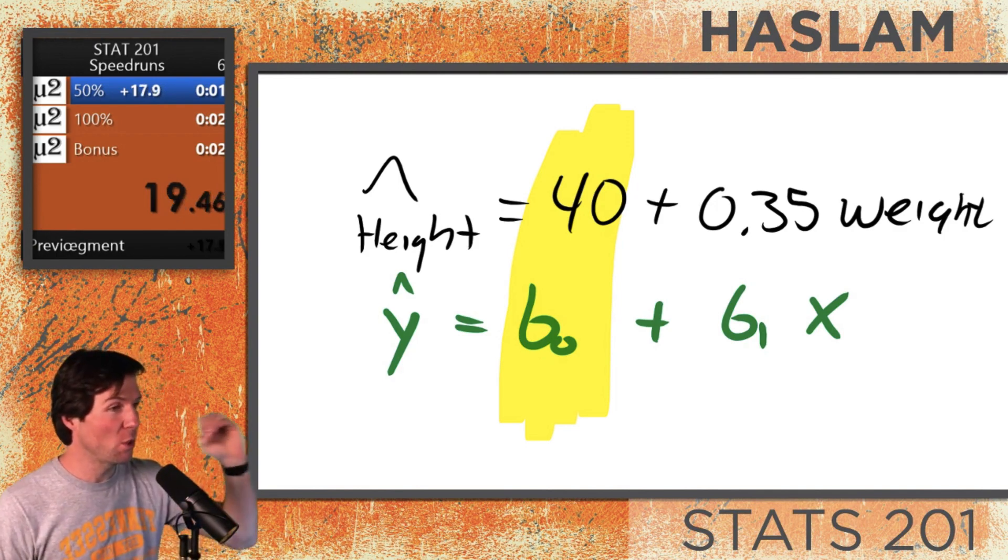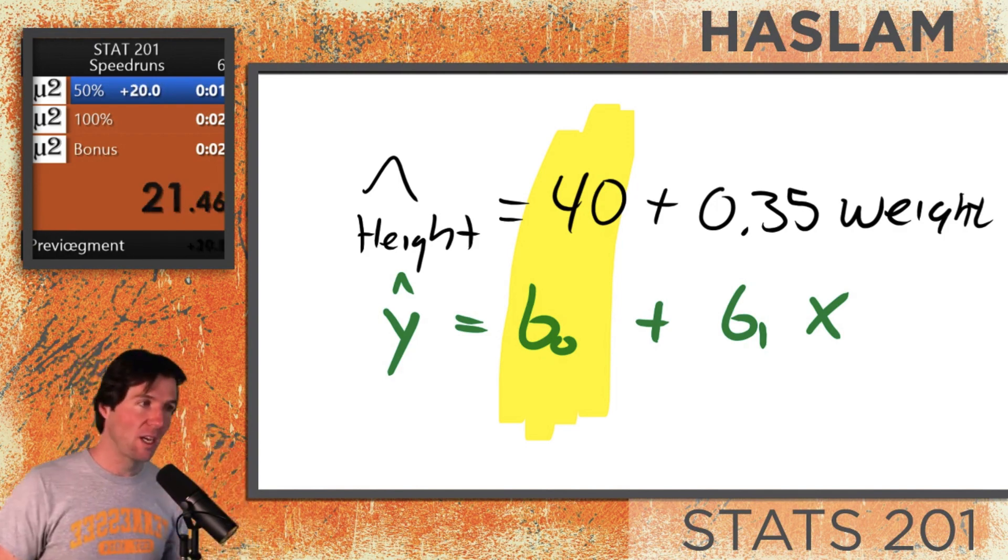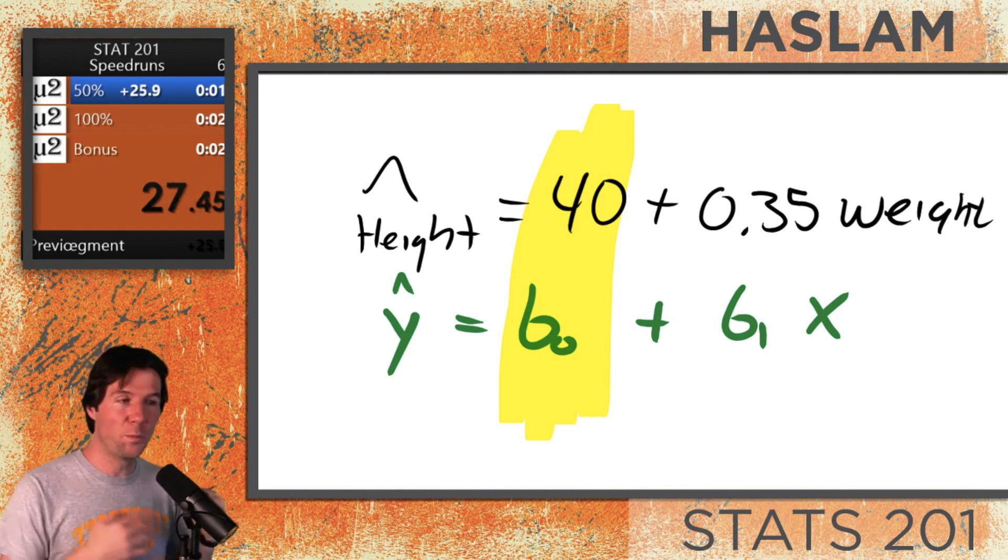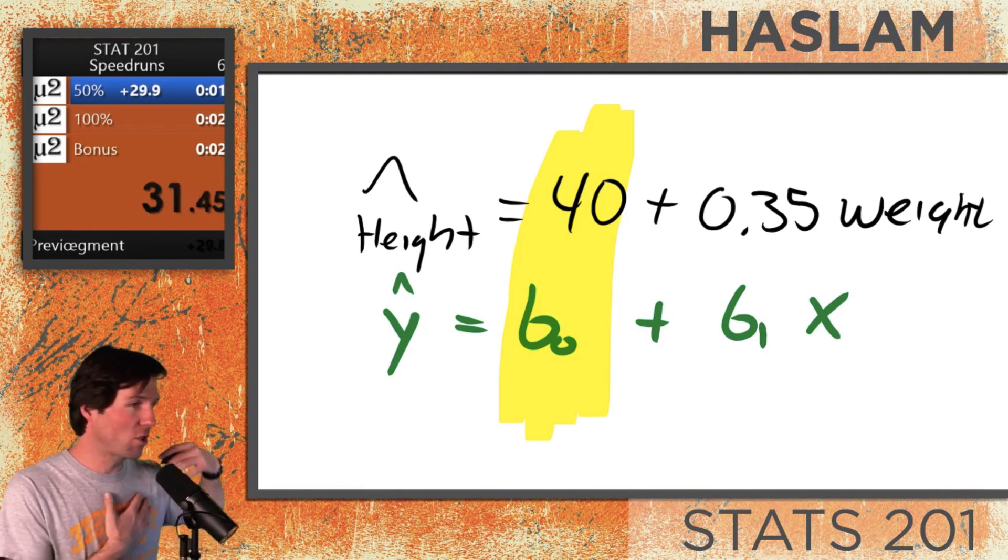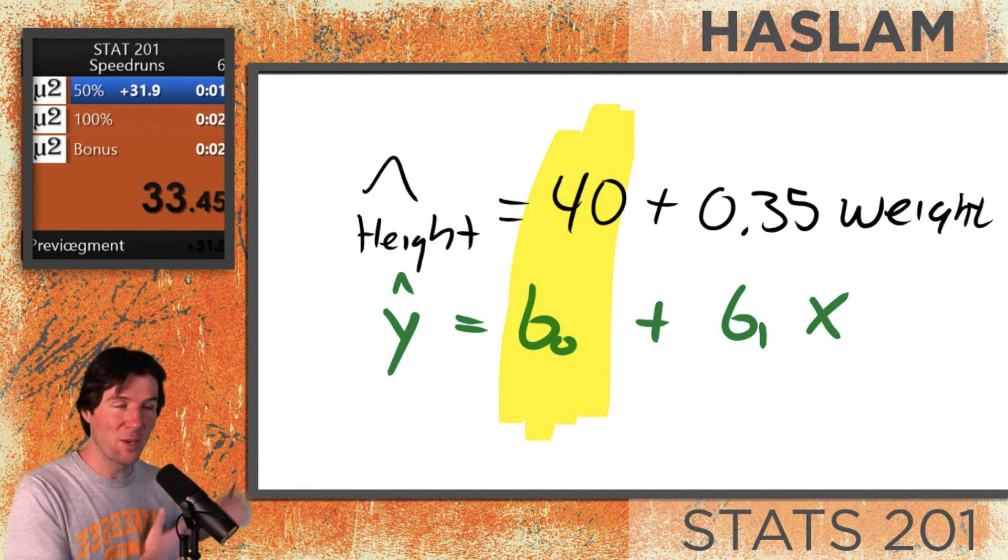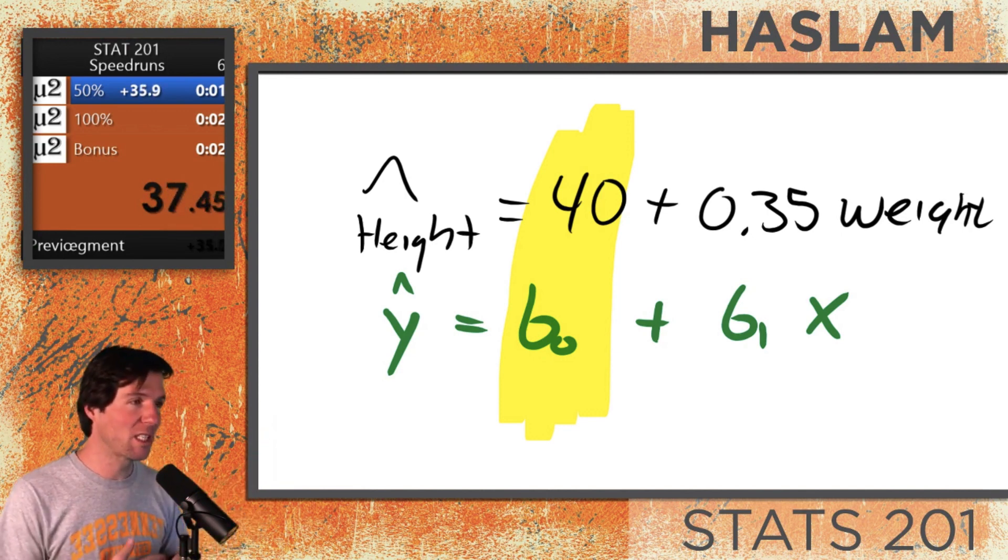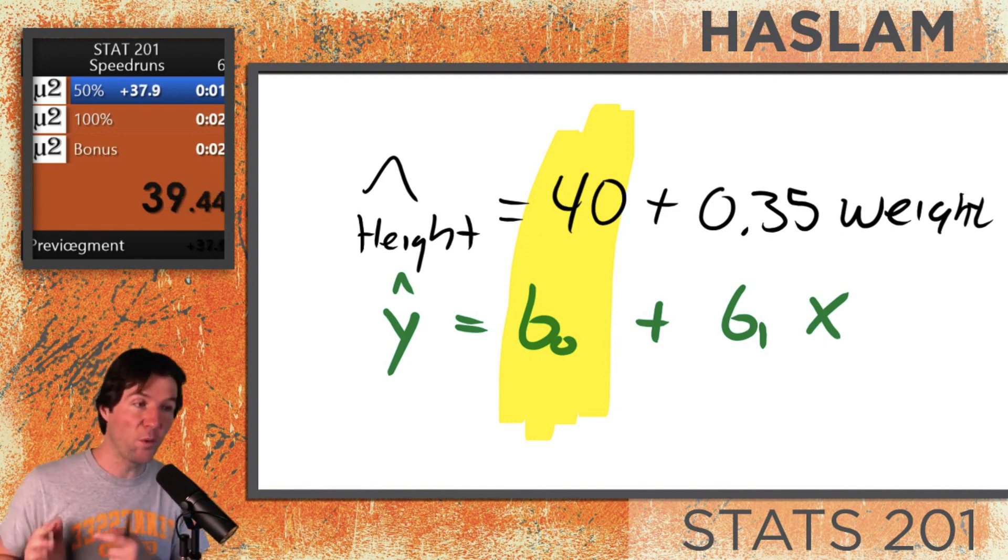You're going to hear me say 0 two times when I interpret this intercept. I'm going to say when x is equal to 0, we expect y to equal B0. Now that's not the in-context interpretation. We need to give the interpretation the names of the variables. So I'm going to say when weight is equal to 0, we expect height to equal 40.